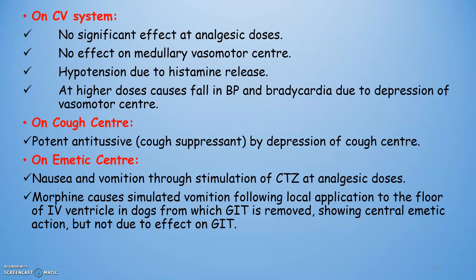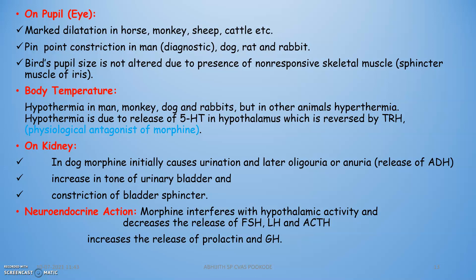On the cardiovascular system, morphine has no significant effect on the medullary vasomotor center but alters heart rate. On the cough center, it is a potent antitussive, suppressing cough by depressing the cough center. On the emetic center, it causes nausea and vomiting through stimulation of the chemoreceptor trigger zone. On the pupil, it causes marked dilation in horse, monkey, sheep, and cattle, but pinpoint constriction in man. On the kidney, morphine initially causes urination, then oliguria or anuria due to release of antidiuretic hormone, increased tone of the urinary bladder, and constriction of the bladder sphincter.